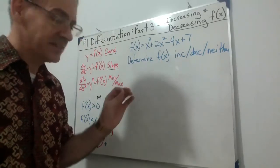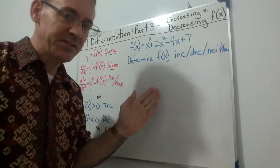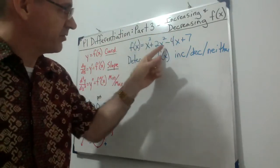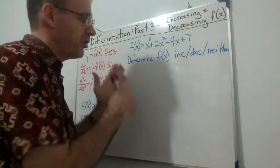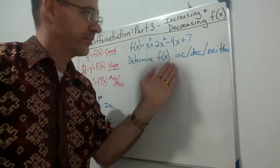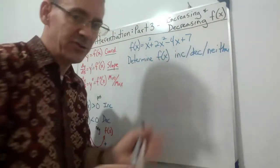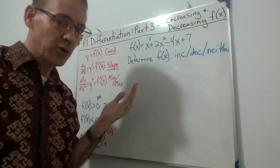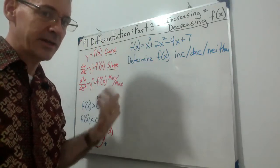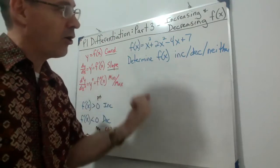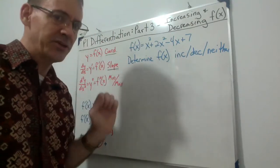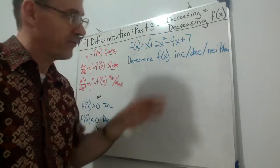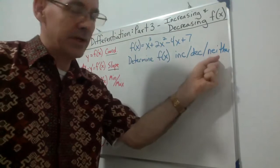Here's our last example with a different twist. The function is f(x) = x³ + 2x² − 4x + 7, and it says to determine whether the function is increasing, decreasing, or neither. Notice it does not give any domain statement — it's not looking for an interval. It wants to know: does this entire graph always increase, always decrease, or go back and forth (neither)?